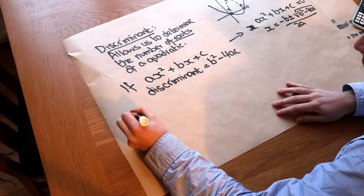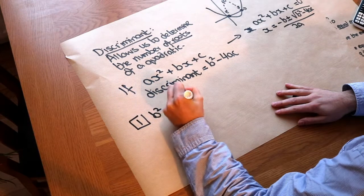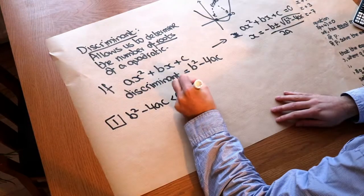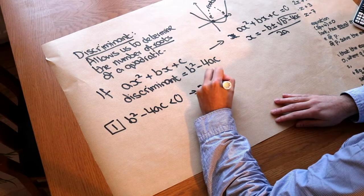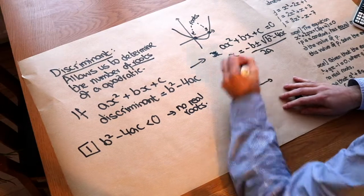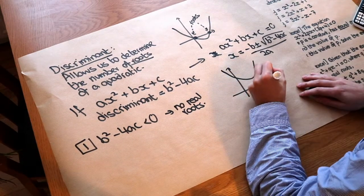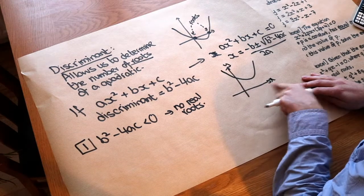So this gives us our first scenario, that if b² - 4ac is less than 0, then we would have no real roots for our quadratic. And in terms of what the graph would look like, if I had a quadratic like this, you can see that that quadratic never hits the x-axis. We have no intercepts, we have no roots.